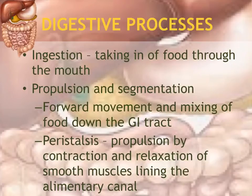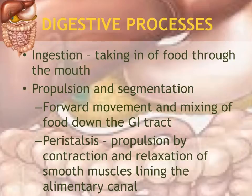There are several processes involved in the digestive system. The first is ingestion, which means taking in food through the mouth. Next are propulsion and segmentation — propulsion means the forward movement of materials down a tube, and segmentation is the mixing of food while it's going down the digestive tract.